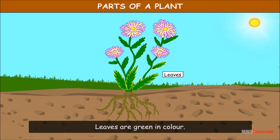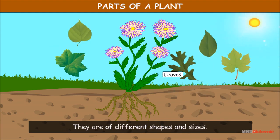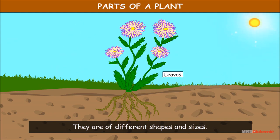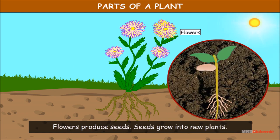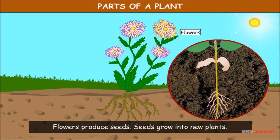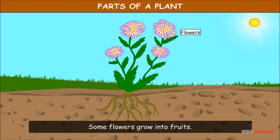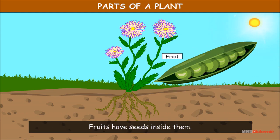Leaves make food for the plant using sunlight. Leaves are green in color and are of different shapes and sizes. Flowers produce seeds, and seeds grow into new plants. Some flowers grow into fruits, and fruits have seeds inside them.